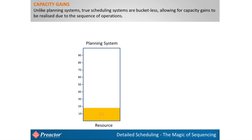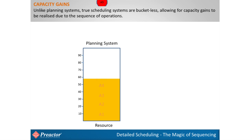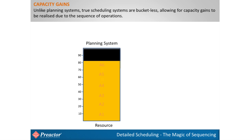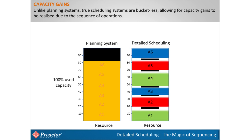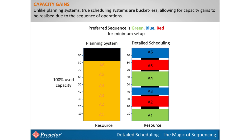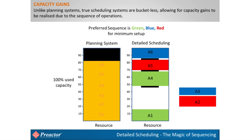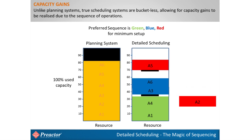In effect, we have achieved a capacity gain. In a planning system, operations are loaded into a bucket of time for each resource — as each batch is added, it takes a portion of capacity, and setup time between each batch must be accounted for, filling up to the maximum capacity of the resource for that period. In a scheduling system, the sequence is preserved with setup times between batches included. The preferred sequence — for example green, blue, then red — minimizes setup time, resulting in a capacity gain and increased efficiency.